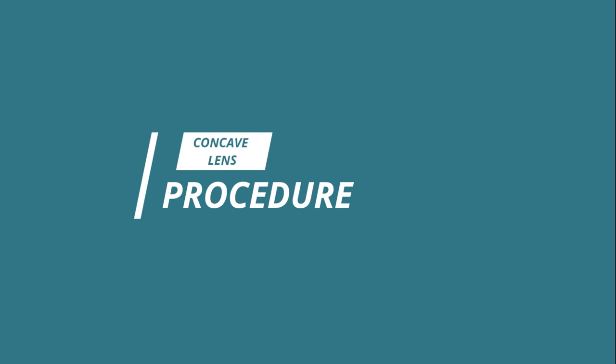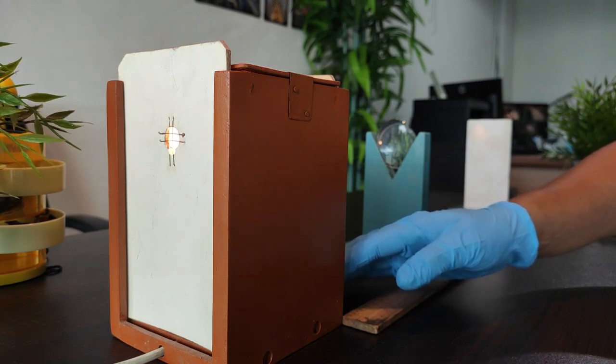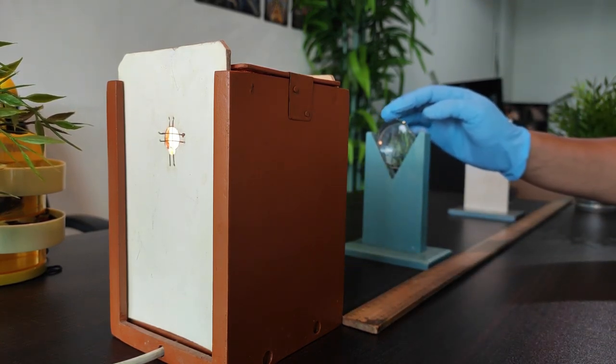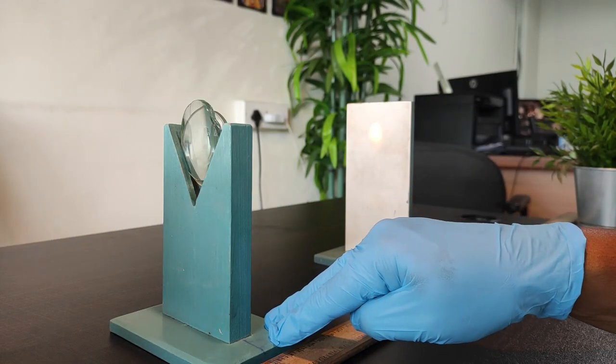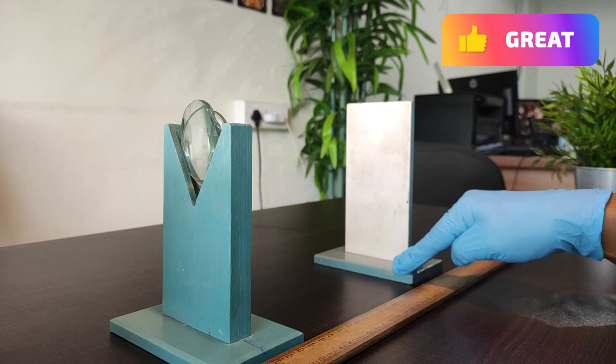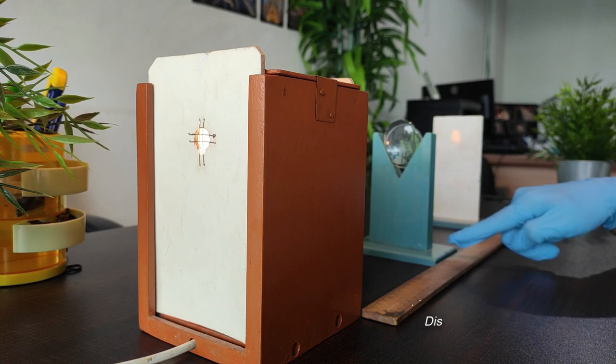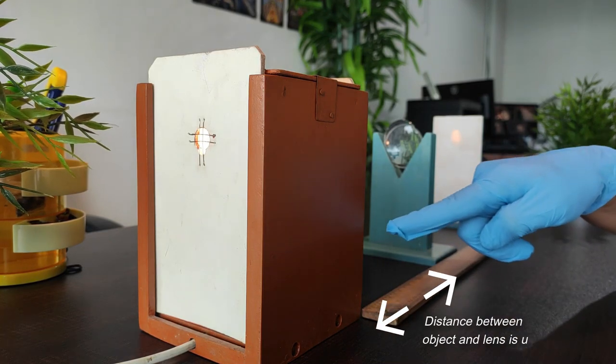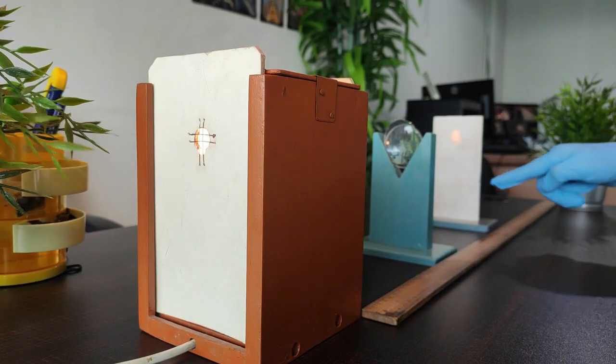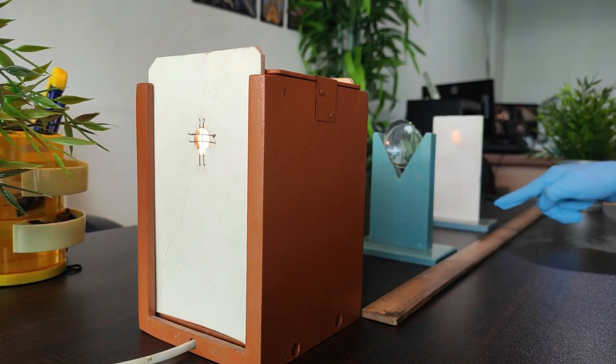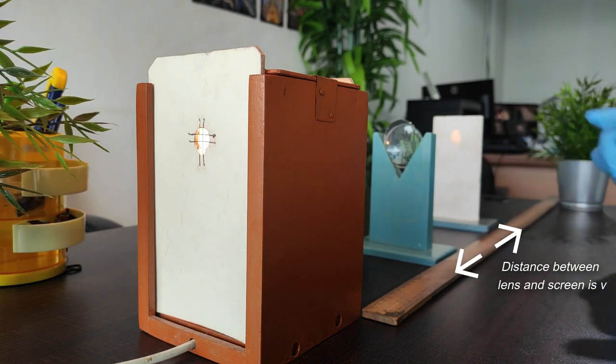Let's have a look at how the concave lens experiment is set up. This is the object we'll be using in this experiment. The lens stand in front of the object is fixed with convex and concave lenses. The screen was then positioned in front of the lens stand. This is how we set up the apparatus. The distance between the object and the lens is denoted by U. The distance between the lens and the screen is denoted by the letter V. Because an image is formed on the screen, the distance between the lens and the screen is given by V.